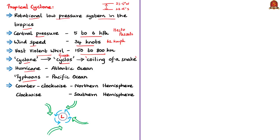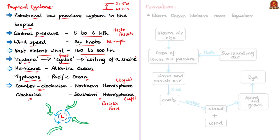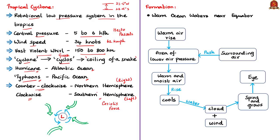The terms hurricane and typhoon are region-specific names for a strong tropical cyclone — hurricanes over the Atlantic Ocean and typhoons over the Pacific Ocean. Tropical cyclone winds rotate counterclockwise in the northern hemisphere and clockwise in the southern hemisphere, due to the Coriolis force — an apparent force from Earth's rotation that pulls winds to the right in the northern hemisphere and to the left in the southern hemisphere. Tropical cyclones are like giant engines using warm, moist air as fuel, which is why they form only over warm ocean waters near the equator.